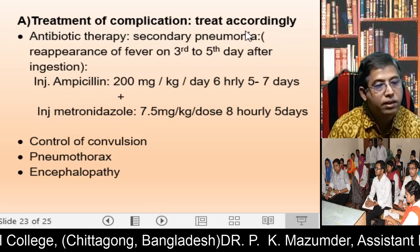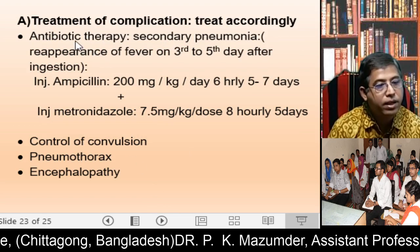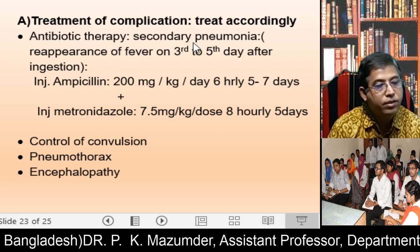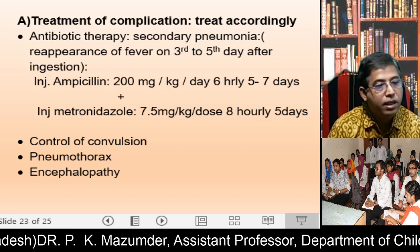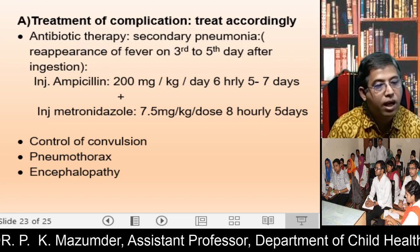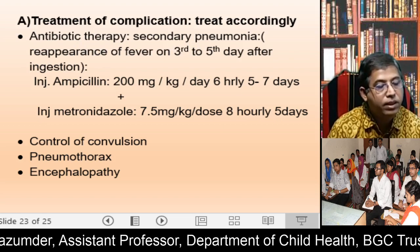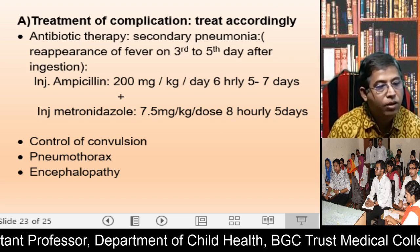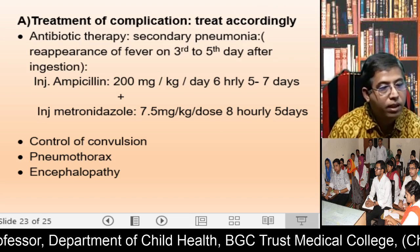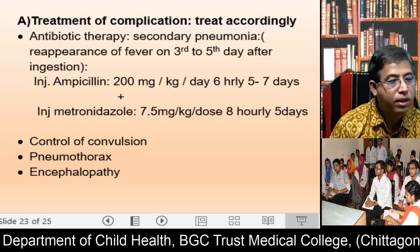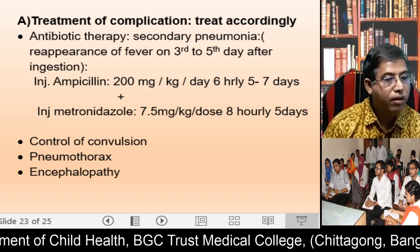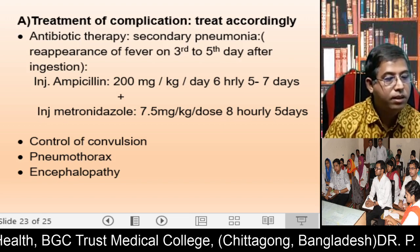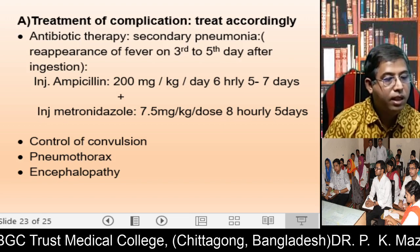Treatment of complications: give antibiotic therapy in secondary pneumonia — if fever appears or recurs on the third or fifth day, give injection ampicillin and injection metronidazole. Control convulsions with anticonvulsant drugs, and treat pneumothorax and encephalopathy accordingly.